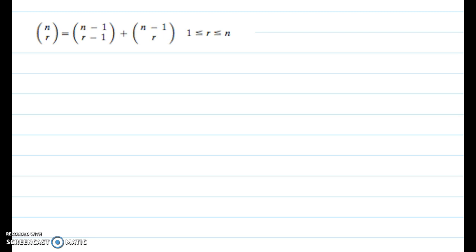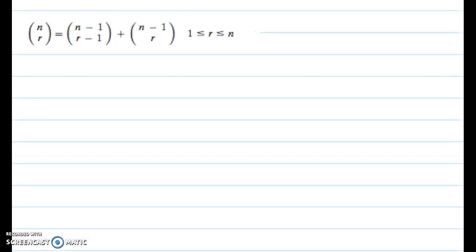This is a combinatorial lemma that may not seem obvious just by looking at it, but we can show it's true by the definition of n choose k. What we want to show is that if you have n things and you're going to choose r of them, we can split it up into the sum of these two chooses.